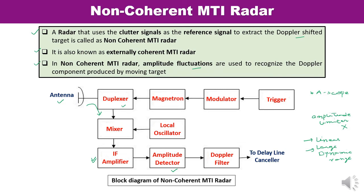The transmitter section, which consists of the magnetron, modulator, and trigger, must be stable over the pulse duration. This stability is required to prevent the beat from overlapping with ground clutter. That is why the transmitter must be very stable in non-coherent MTI radar.